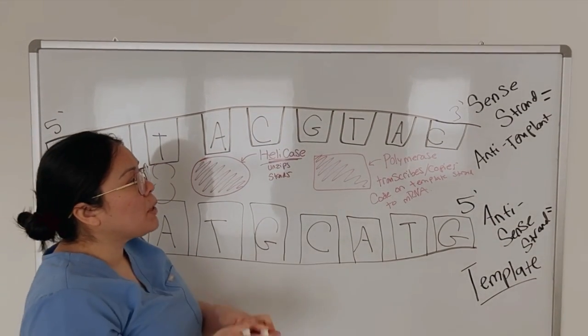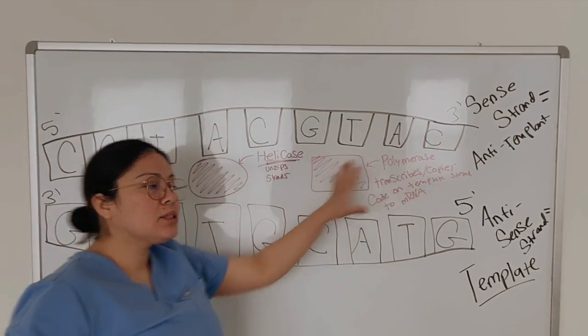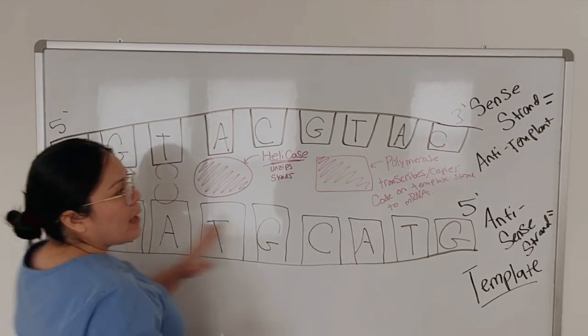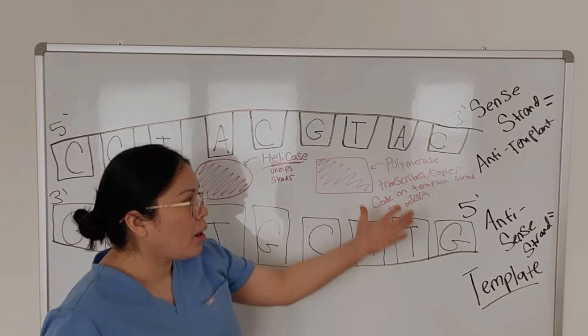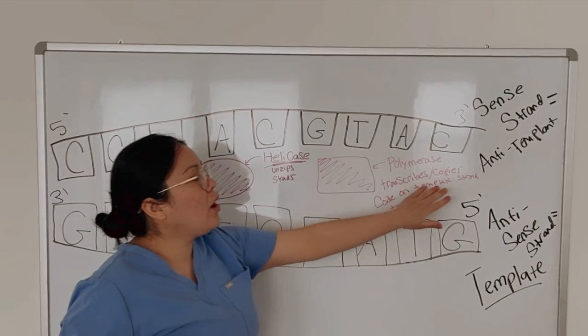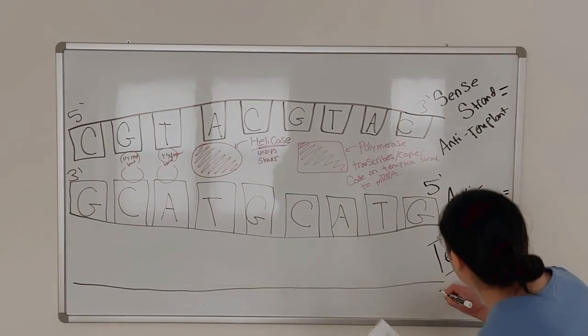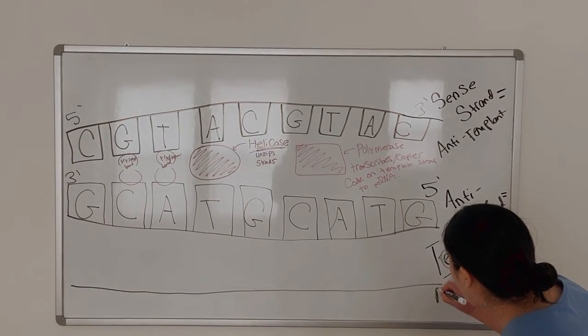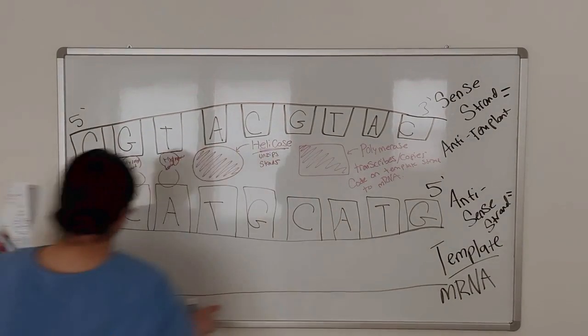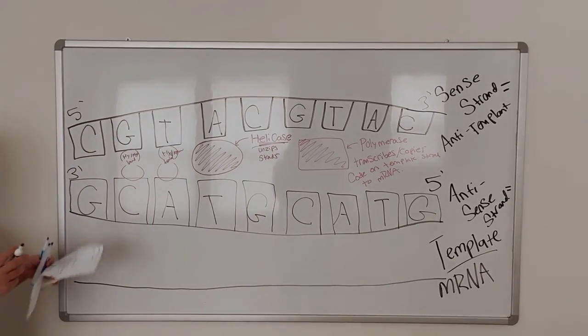Next is polymerase. Once helicase has opened up the DNA strands, polymerase is going to work with this template strand right here, the one on the bottom, and it's going to transcribe or copy the code, which is these nitrogenous bases onto the mRNA. So let's look at our mRNA strand, our messenger RNA strand that's going to be made out of this template strand. So let's look at how that's done.